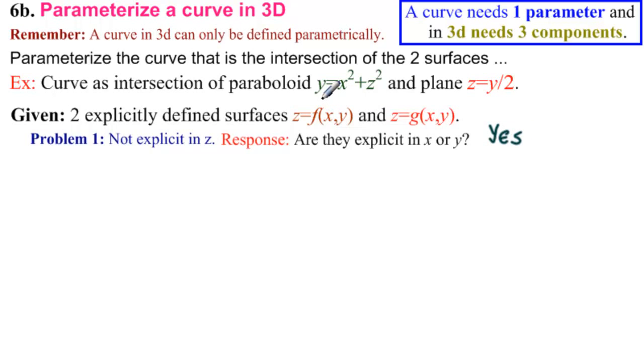Y is given explicitly here, x squared plus z squared. And I can solve for here, y equals how much? 2 times z. So we're going to use y. So we would have y equals x squared plus z squared and y equals 2z. So if you can't do it in z, see if you can do it in x or in y.